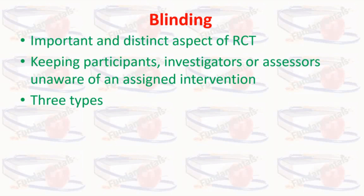Blinding is of three types. Single Blind: here the participants do not know whether they are assigned to the study or the control group. It means that they do not know whether they are getting the new drug under investigation or the old conventional drug. However, only the investigator knows who is getting which drug. This trial helps to overcome subject variation.